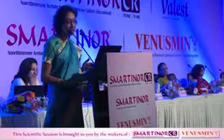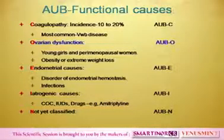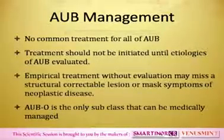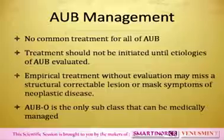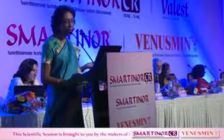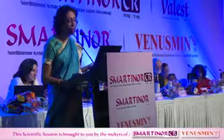Other causes — most of them are functional causes where one function or another is in disorder. So you really cannot have the same treatment for all of them either, whatever your medical management is. You end up saying that specific treatment is needed for specific causes. Other than one subsegment of AUB, which is AUBO — ovarian dysfunction — which can happen in young women or perimenopausal women, in obesity or extreme weight loss. There is no common treatment.